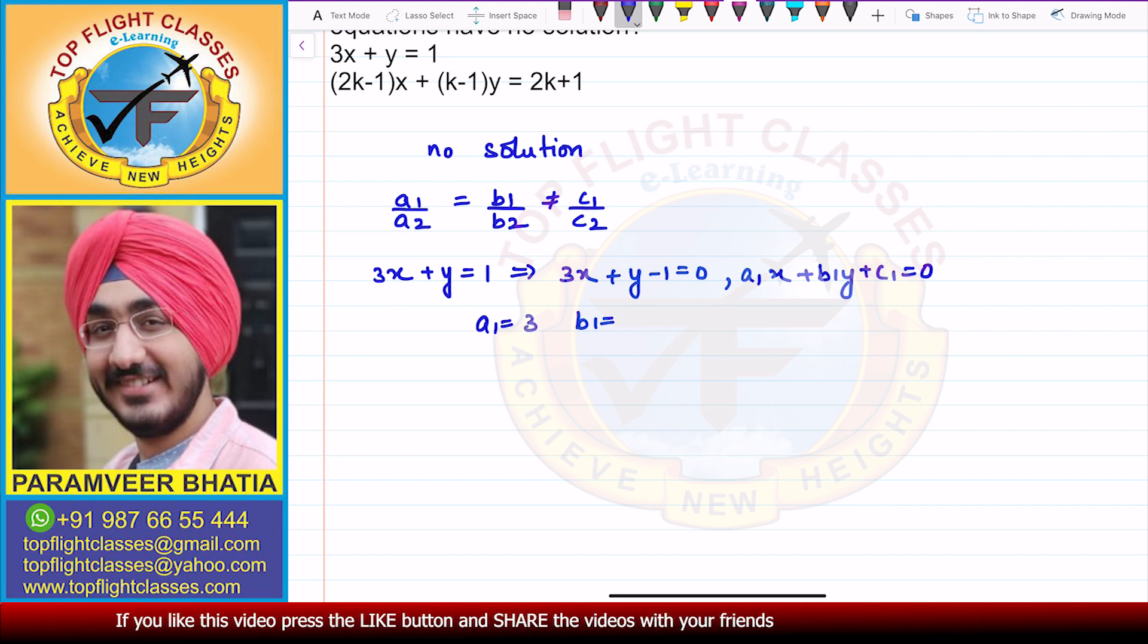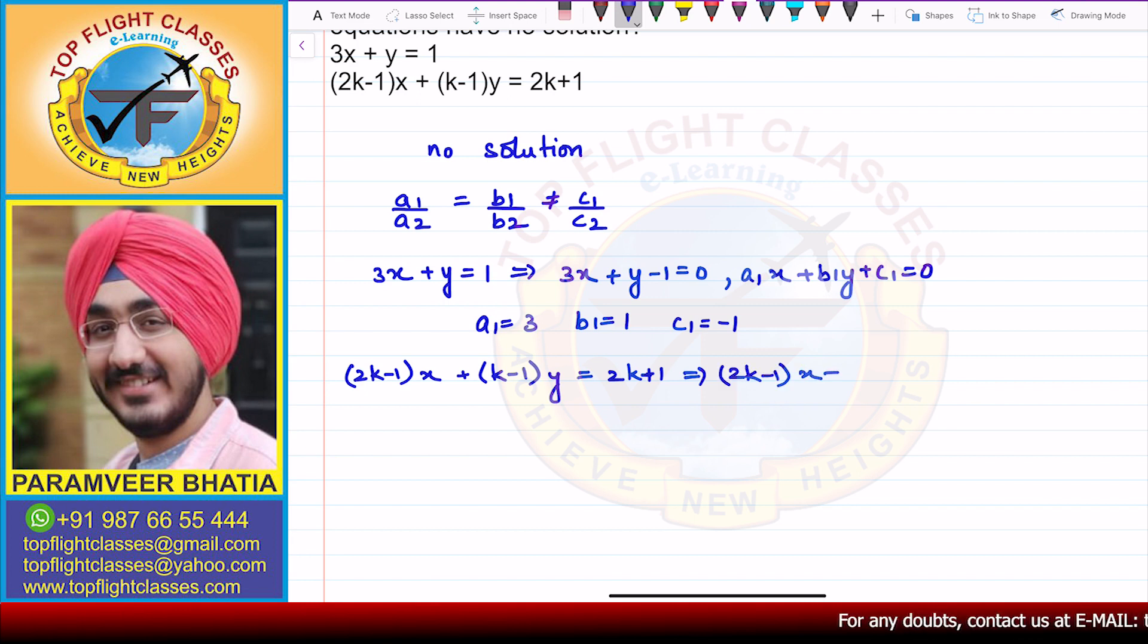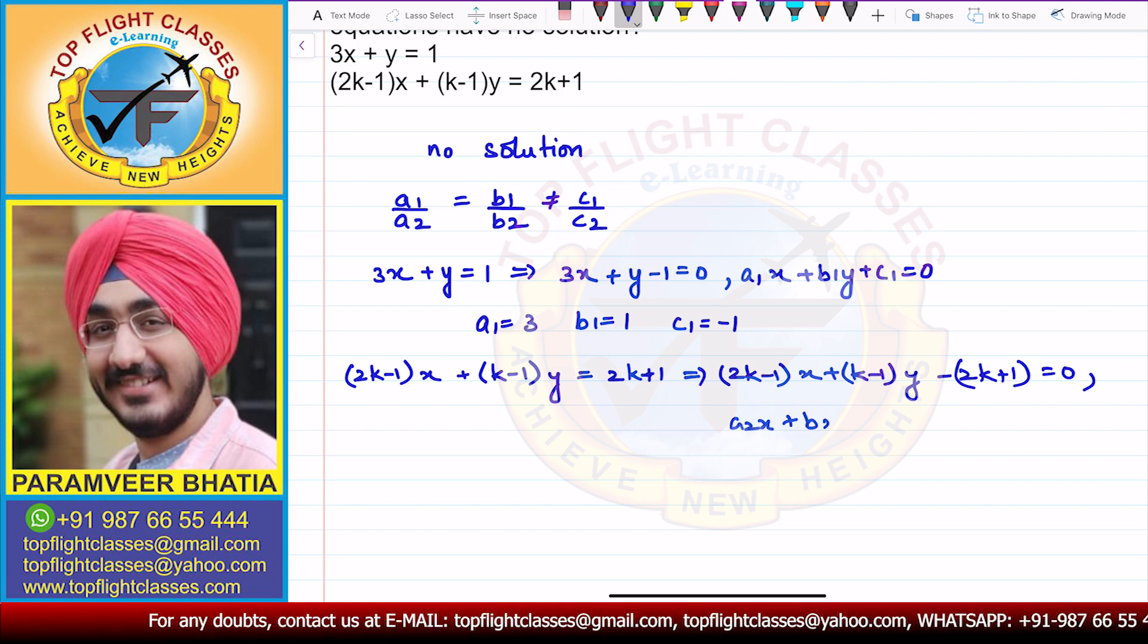Second equation is (2k-1)x plus (k-1)y is equal to 2k plus 1. So this can be written as (2k-1)x plus (k-1)y minus (2k+1) is equal to 0. On comparing this with a2x plus b2y plus c2 equal to 0...